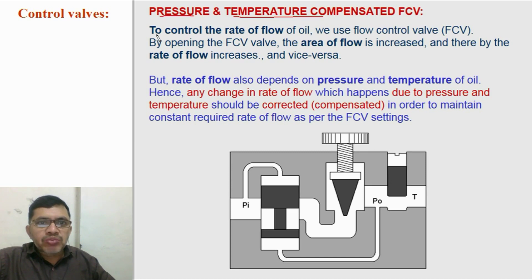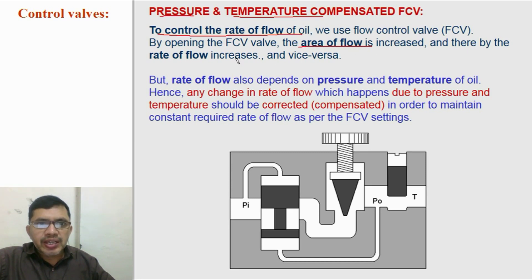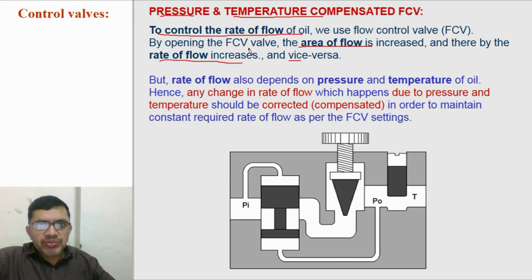We use flow control valves to control the rate of flow of oil. By opening the flow control valve, the area of flow increases and rate of flow will also increase and vice versa. If we close the flow control valve, area of flow will reduce and flow rate will also reduce.